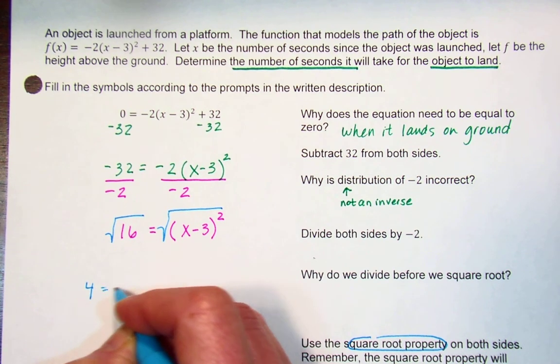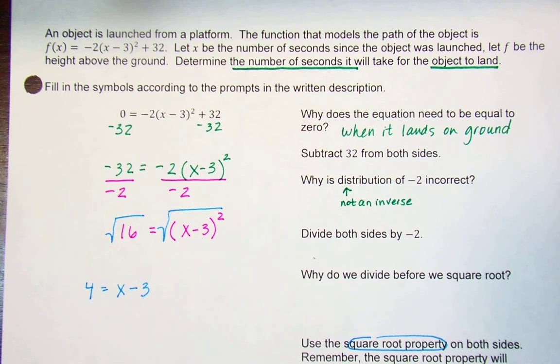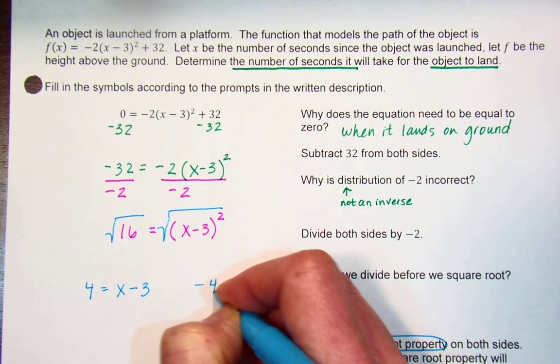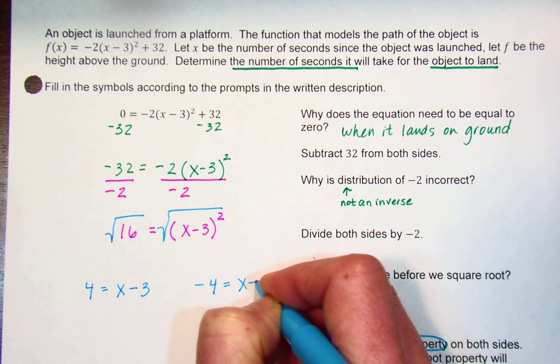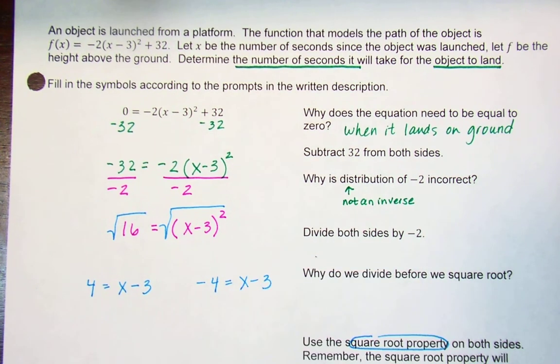That equals x - 3. Or the negative root of 16 is negative 4, and that also equals x - 3. For here we're just going to solve for x by adding 3 to both sides.